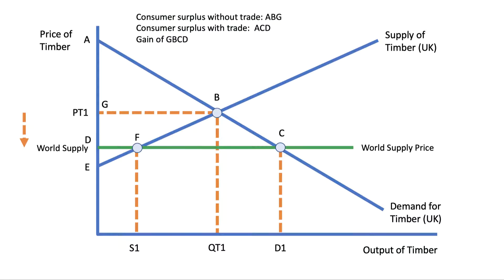Consumer surplus without trade at price PT1 equals the area ABG — the area underneath the demand curve and above the price. However, if you can now buy timber more cheaply, consumer surplus after trade increases to ACD — a bigger area, with higher output and a lower price. So there's an increase in consumer surplus of GBCD.